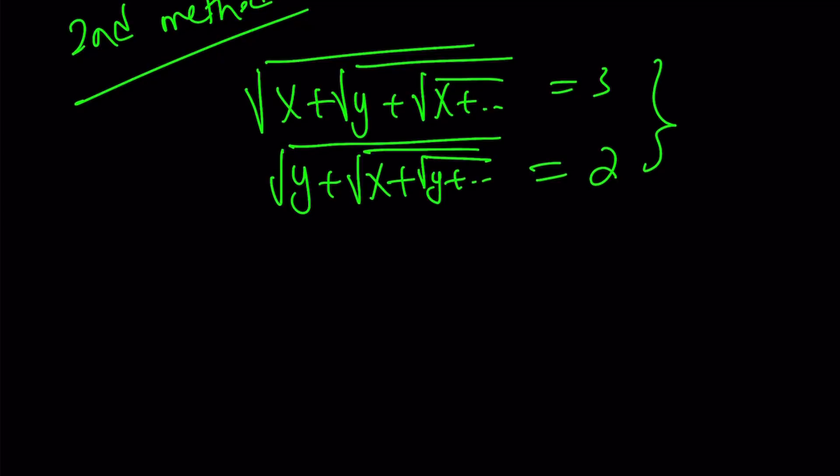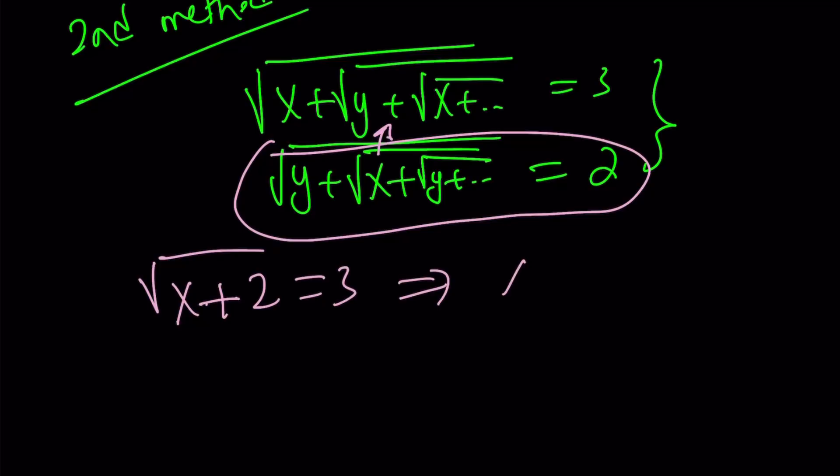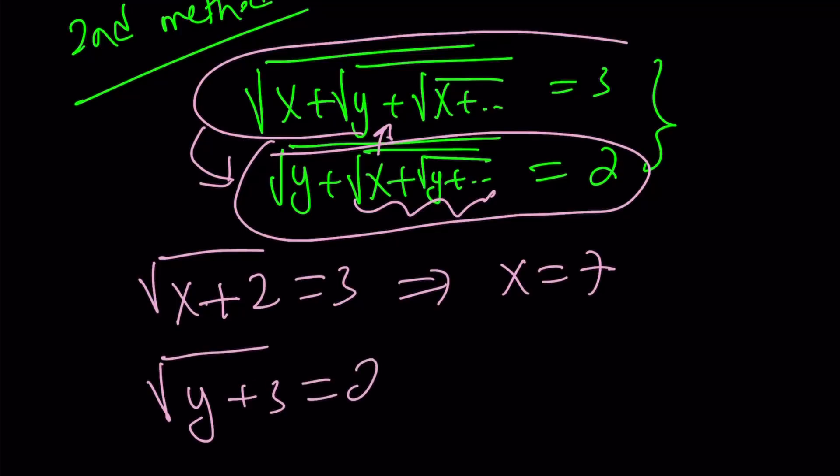All right. Anyways. So I'm going to go ahead and sub the second equation into the first one. Why? Because we can just go ahead and do it. Look at this. I'm just going to go ahead and sub it. So it's going to look like square root of x plus 2 equals 3. Square both sides. And you're going to get x equals 7. Now, let's go ahead and sub the first equation into the second one. And this is what it's going to look like. Square root of y plus. Notice that this part is 3. Square root of y plus 3 equals 2. And if you square both sides and solve for y, you're going to get y equals 1 from here.